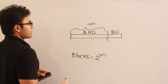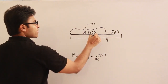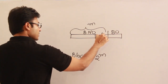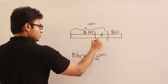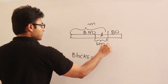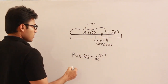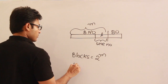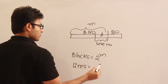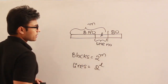The least significant l bits are used to represent the line number in the cache. Therefore, the number of lines equals 2 power l.